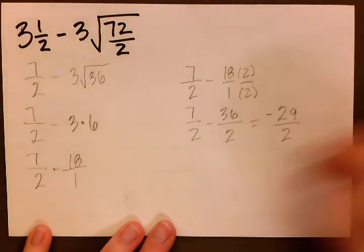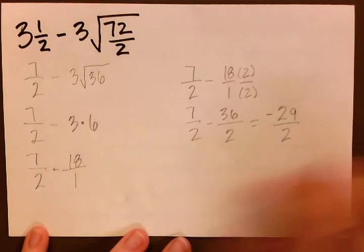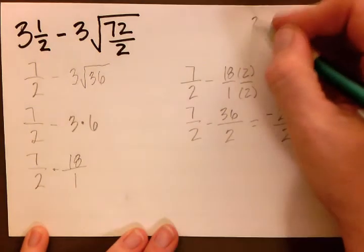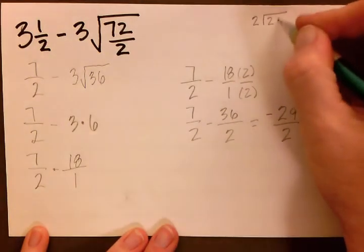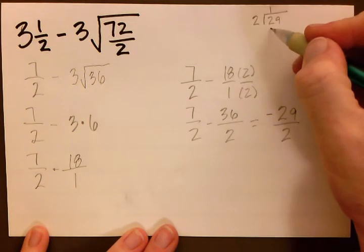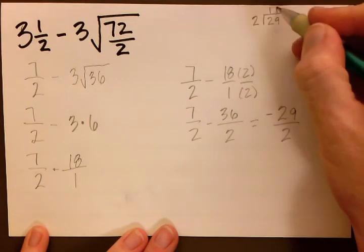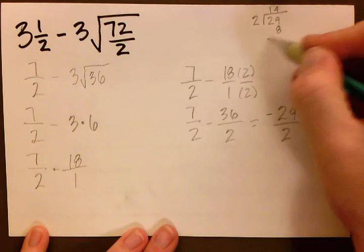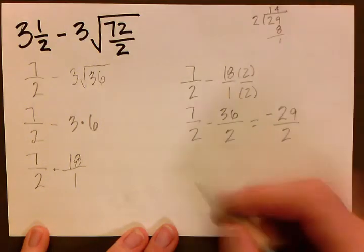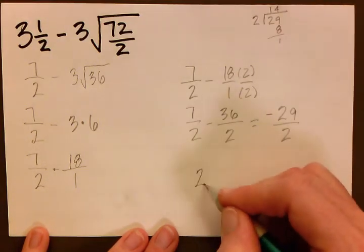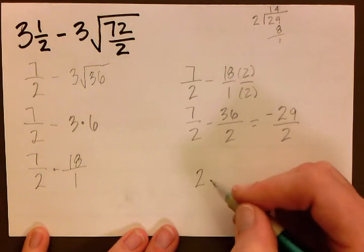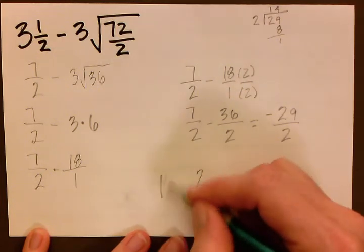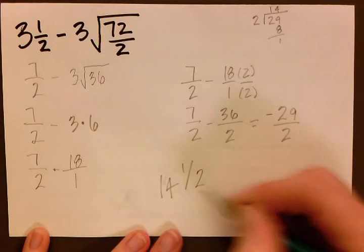Now the last thing we want to do is change it back into a mixed number. So we have 2 into 29. That gives us 14 with 1 remaining. So our answer is... excuse me. Our answer is 14 and 1 half.